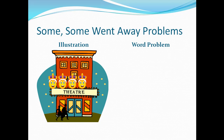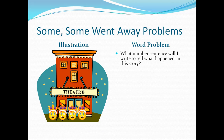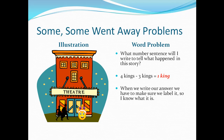Another example. This time, as we did before, see if you can figure out the number sentence. There are four to start, three go away. Your number sentence has to say four kings minus three kings equals one king, because there are four there, three went away, one is left. Again, make sure your answer is labeled so I know what the problem is talking about.